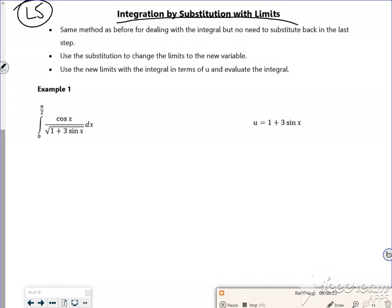It tells me to use u is 1 plus 3 sine x. So if u is 1 plus 3 sine x, then du/dx is going to be 3 cos x. If I rearrange to get dx on its own like we have been doing, du over 3 cos x is dx.